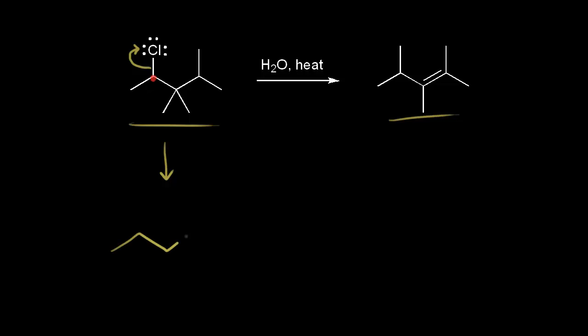Let's draw out our carbon skeleton and put in the methyl groups. The carbon in red is a secondary carbocation — it has a plus one formal charge, and it's secondary because that carbon is directly bonded to two other carbons.